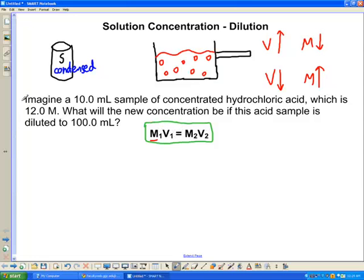So let's say we have this question here. Imagine a 10 mL sample of concentrated hydrochloric acid which is 12.0 M. What will the new concentration of this acid sample be if this acid sample is diluted to 100.0 mL?